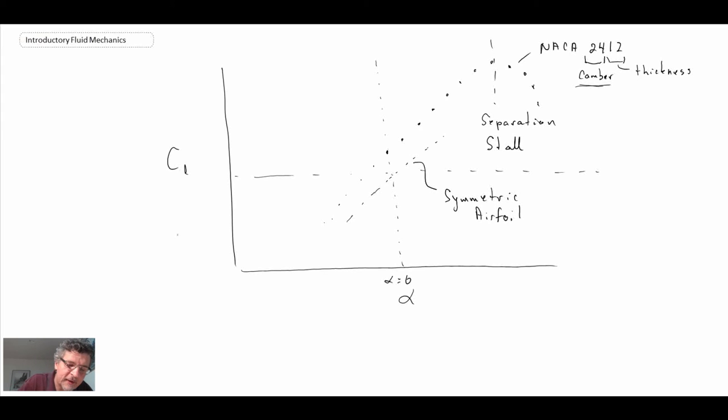So that is how the data is plotted. And then there will also be moments. Sometimes they'll have moments about the quarter chord and there will also be drag. And so you'll get the drag characteristics for the airfoil.